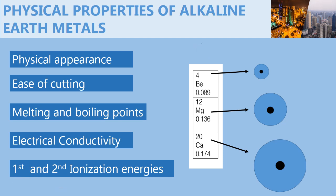Let us start with magnesium. The first ionization energy of magnesium is lower than the second ionization energy of magnesium, or the second ionization energy is higher than the first. This is because once magnesium has lost the first electron from the outermost energy level, the overall positive charge holding the remaining electrons is much higher. This means that removing the second electron requires more energy. The same applies to the other members of the alkaline earth metals.